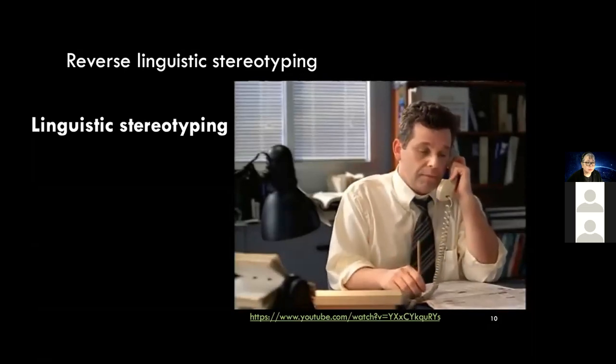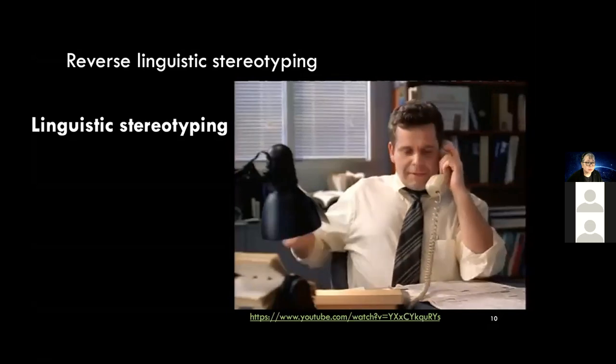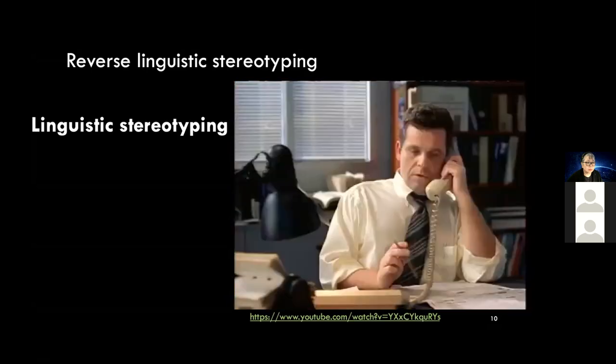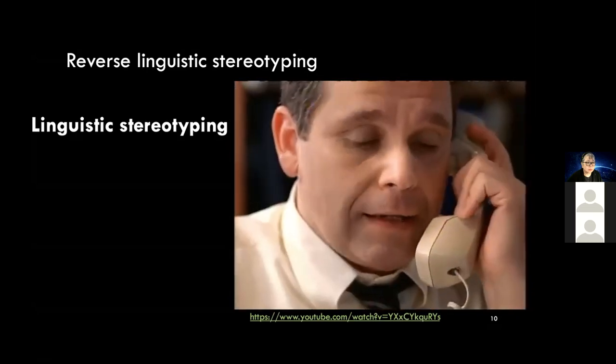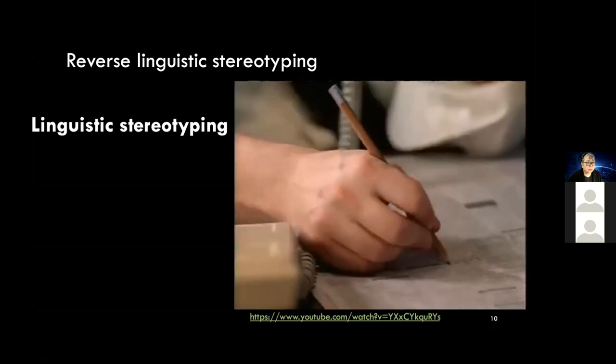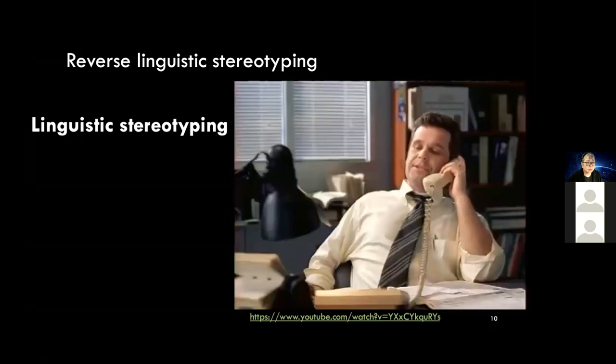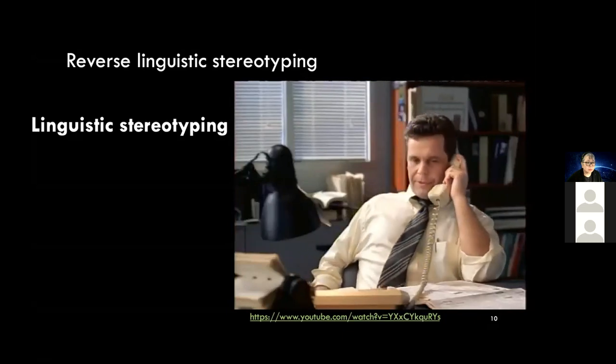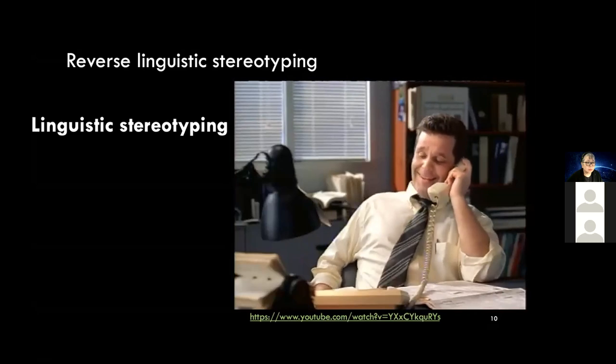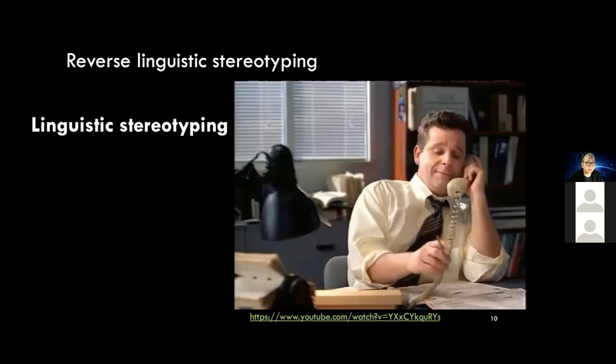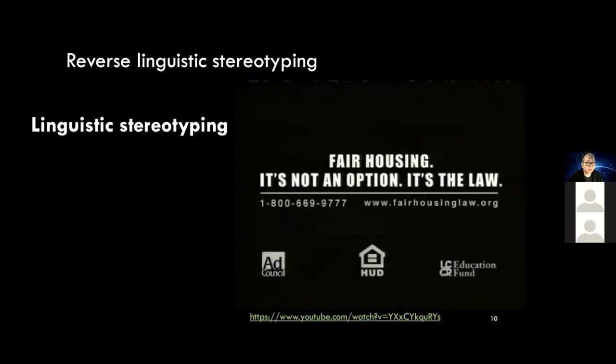[Housing discrimination video plays with various callers with different accents calling about an apartment, including Juan Hernandez, Sanjay Kumar, Tyrone Washington, Chen Ling, Khalid Ben Ali, Moshe Goldberg using a wheelchair—all told the apartment is not available—until Graham Wellington calls and is told it is available. Video ends with message: 'Housing discrimination is illegal. If you think you've been a victim because of your race, color, national origin, sex, religion, disability, or family status, call us. Fair housing. It's not an option. It's the law.']